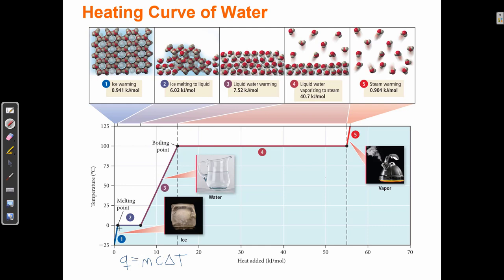Q = mcΔT is how I calculate how much heat is required given the mass, the heat capacity, and the change in temperature. If I have Q and T, all I need to know is the mass of the substance — a little bit of water takes less energy, a lot of water takes more. The heat capacity is a constant for that substance. This equation tells me the temperature of a substance as a function of how much heat I've added.